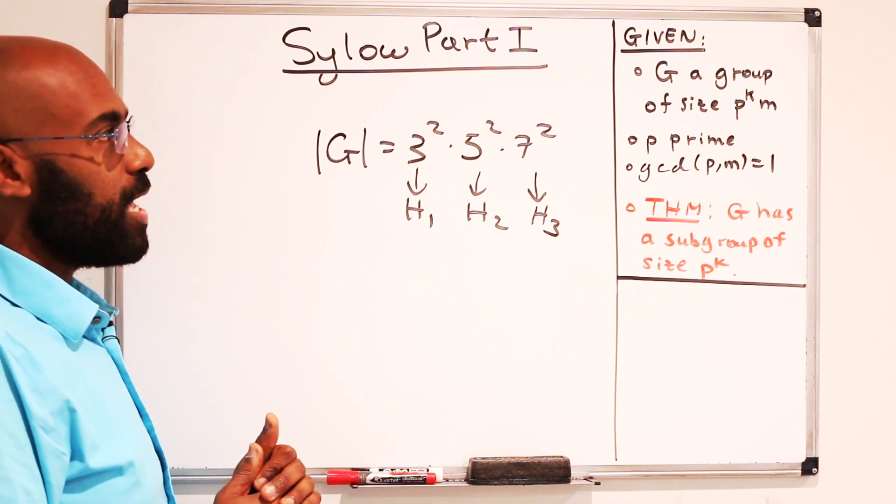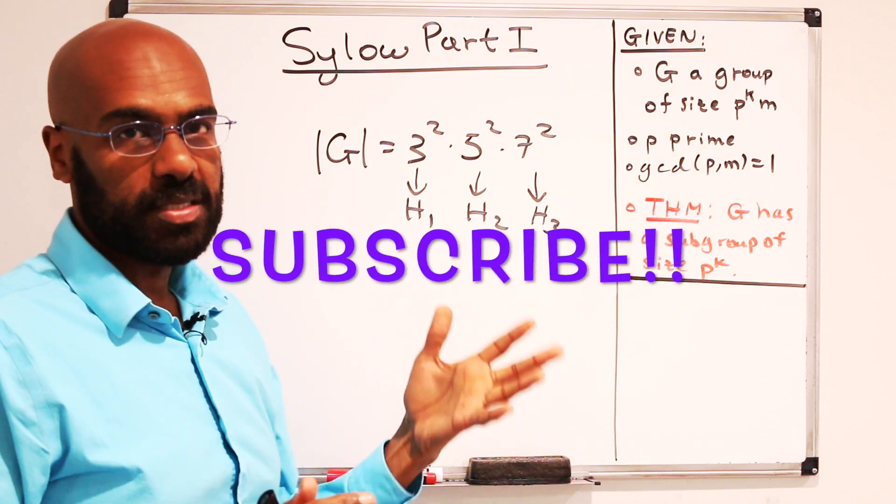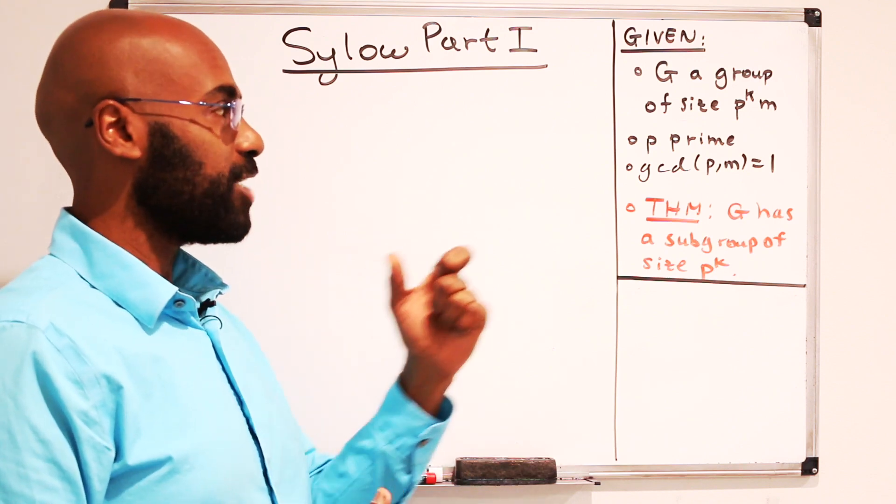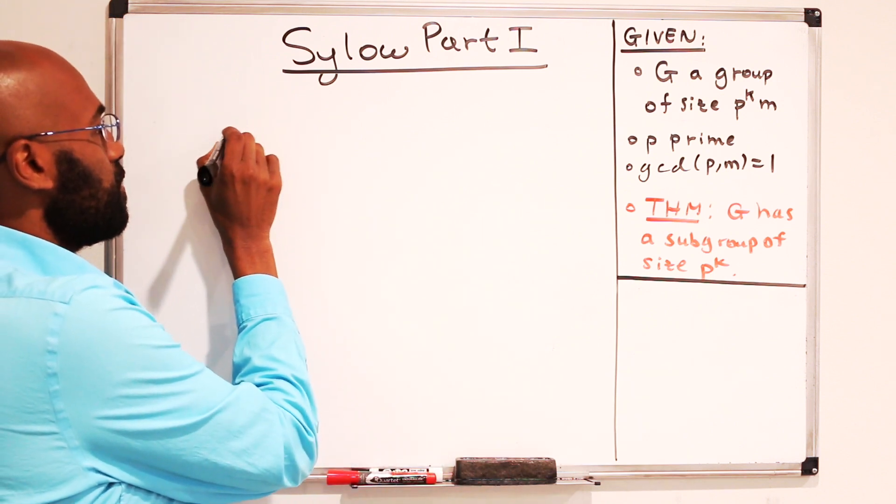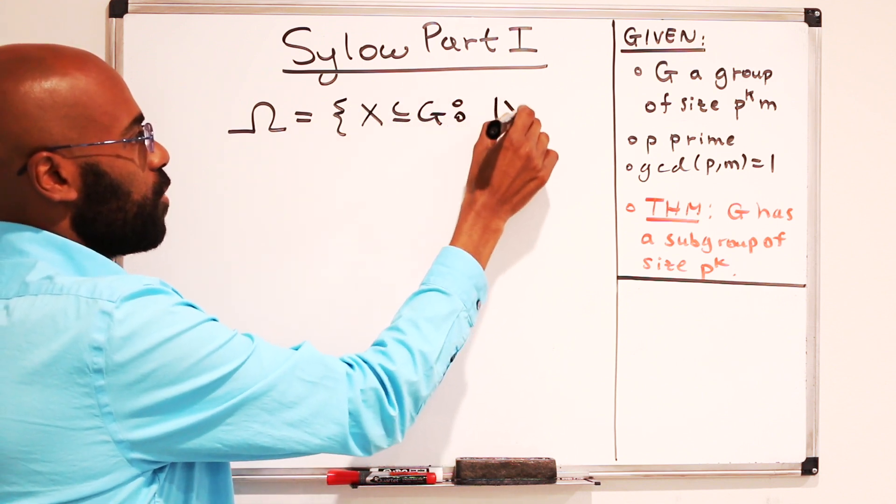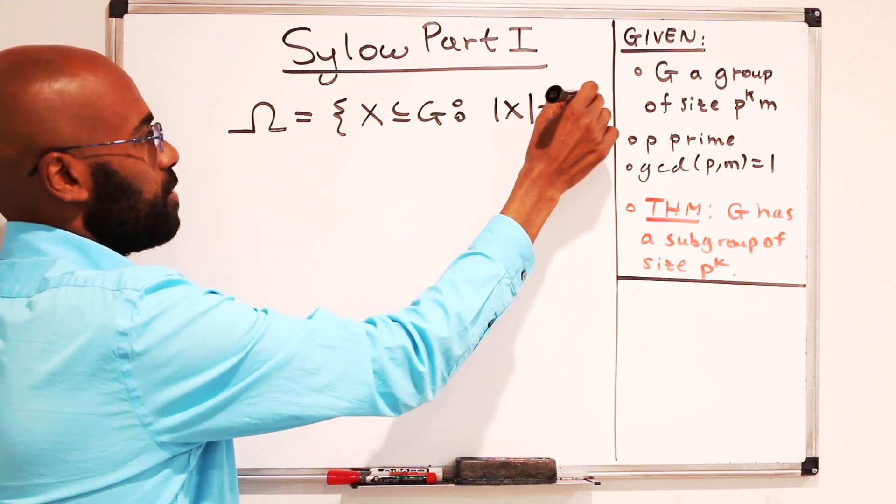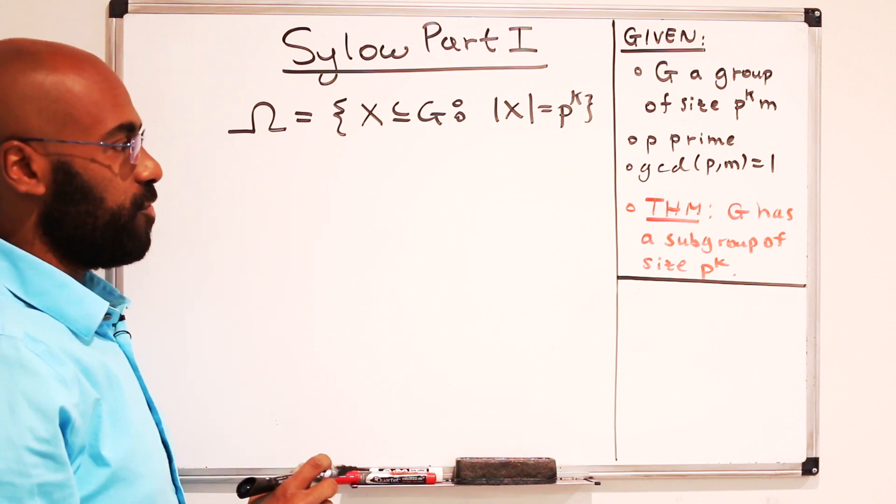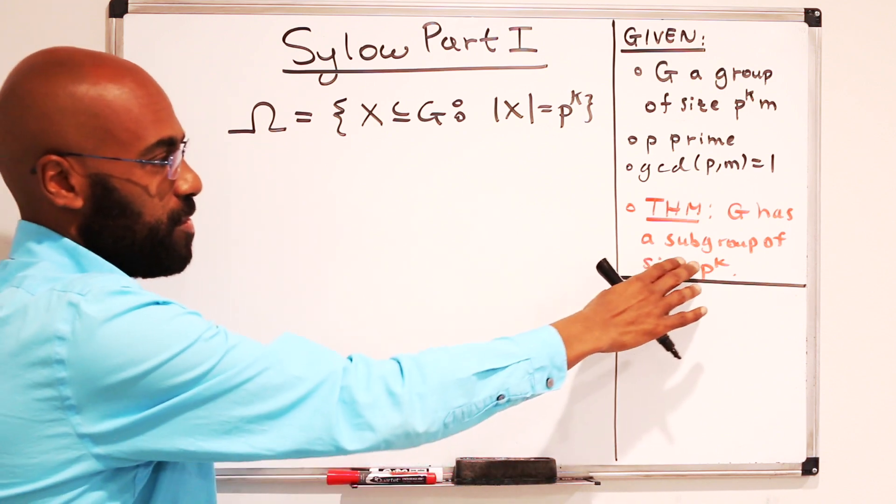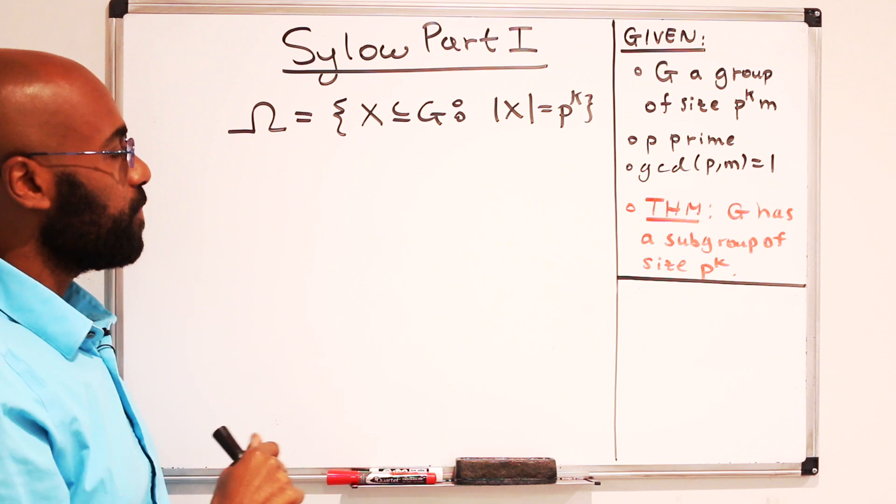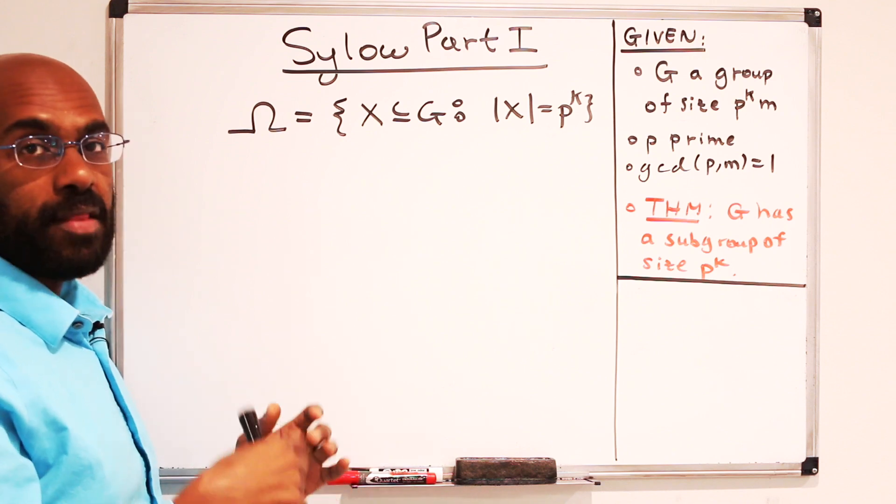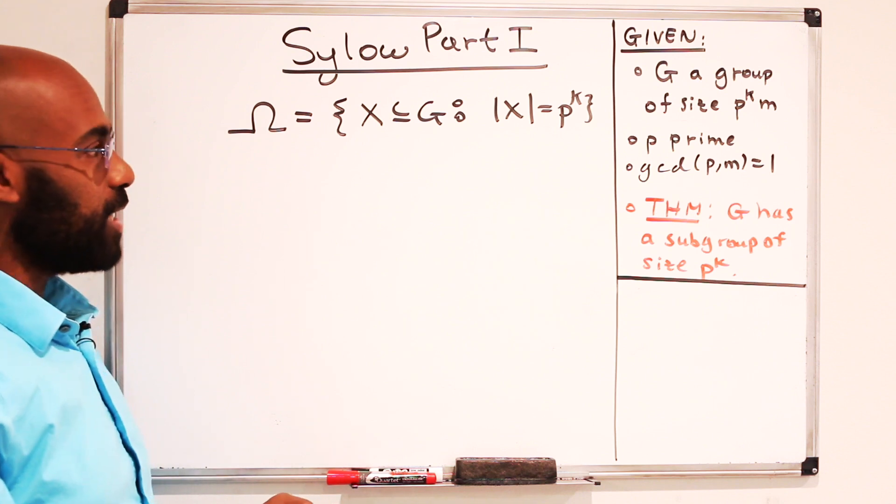So let's go ahead and actually see how this proof starts out and where the proof for this thing comes from. The proof is going to rely on looking at a particular group action on a particular set. The set, which I'm going to call omega, consists of subsets of G of a particular size. They're ones of size p to the k. So this p to the k right over here that we have in our information given. So this is not subgroups of size p to the k. We don't know yet whether there even is one. It's just subsets, period.